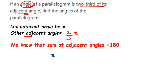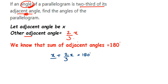The equation is x plus two-thirds of x equals 180. Now we have a fraction here. Since no coefficient is written in front of x, there is an implied 1, so we can write x as x over 1. Now we need to add these fractions.